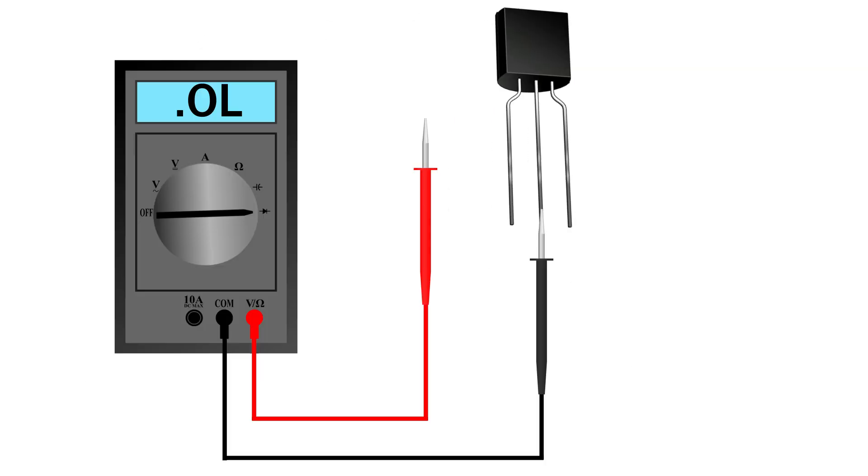Connect multimeter negative probe to middle pin. Touch positive probe to left pin. You will see voltage drop. Touch positive probe to right pin. Again you will see voltage drop. Both these readings confirm it's a PNP transistor.